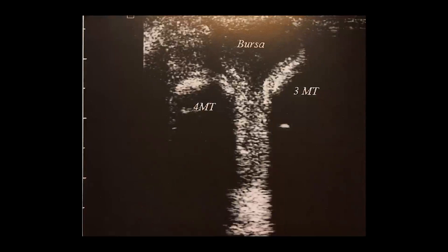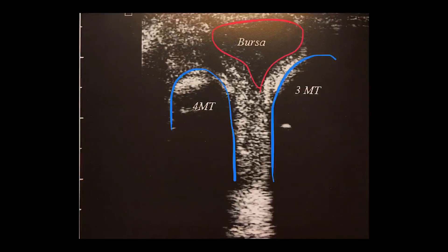Lastly, as discussed before, this is a transverse image at the level of the third and fourth metatarsal heads seen in the short axis view. The third and fourth metatarsals are noted as seen in the image. The bones seen in short axis demonstrate strong echogenic superficial interfaces with posterior acoustic shadowing. Note the complex hypoechoic material distending the third web space, consistent with an intermetatarsal bursa. If compressed, you would note compressibility of this bursa, as opposed to a neuroma which would not compress. Thank you guys for watching — hope you learned something. Until next time.